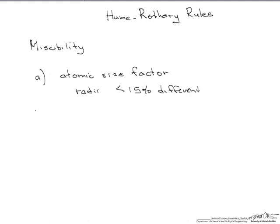The second rule or factor is the crystal structure. What we mean by the crystal structure is, is it face-centered cubic, body-centered cubic, hexagonal, etc. For complete miscibility, the crystal structure has to be the same.